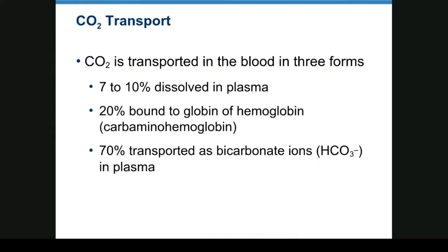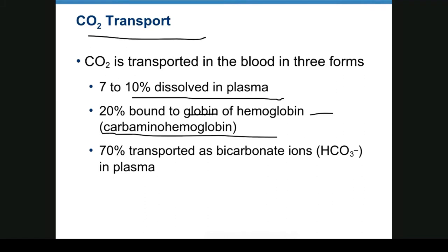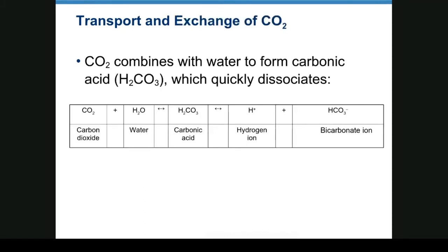CO2 transport occurs in three forms: dissolved in plasma, bound to the globin portion of hemoglobin as carbaminohemoglobin, and 70% transported as bicarbonate ions in the plasma. When CO2 dissolves in water, a reversible reaction produces carbonic acid, which then dissociates into hydrogen ions and bicarbonate ions.